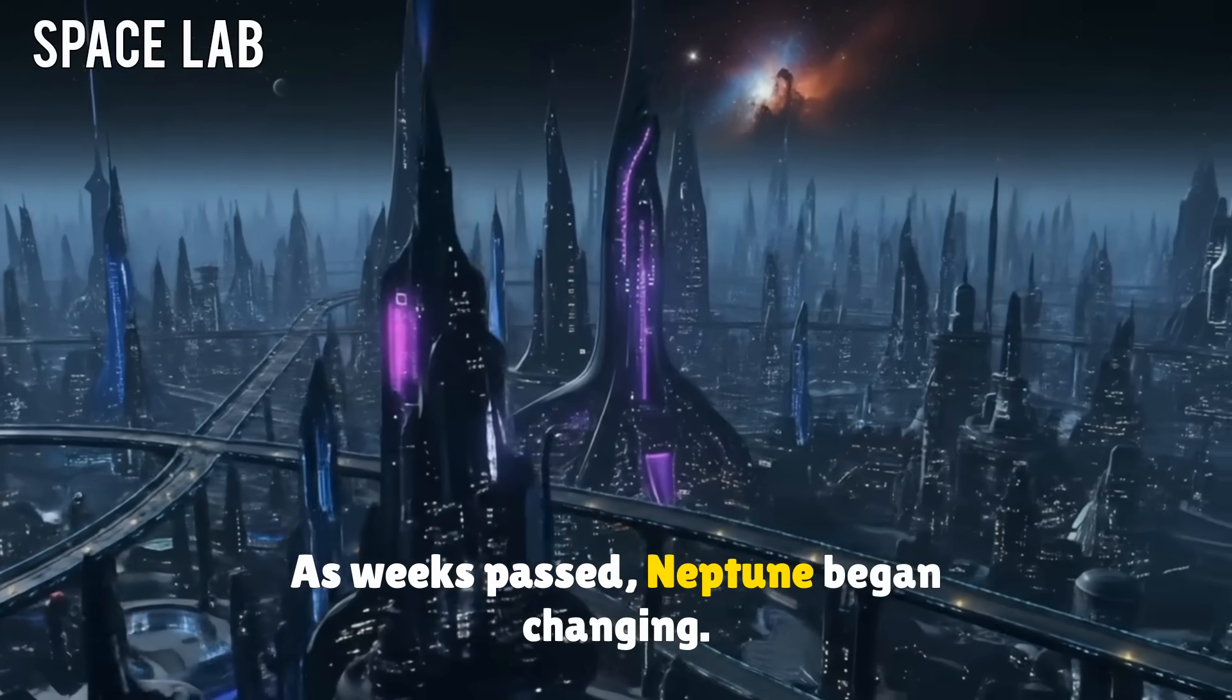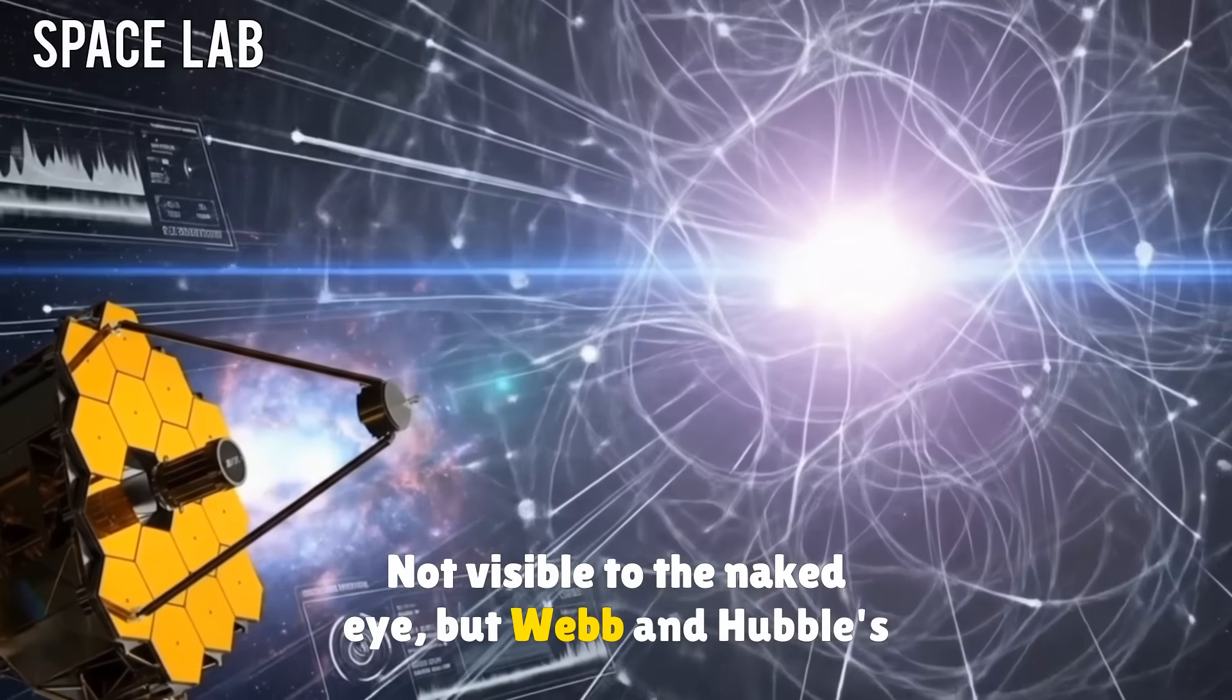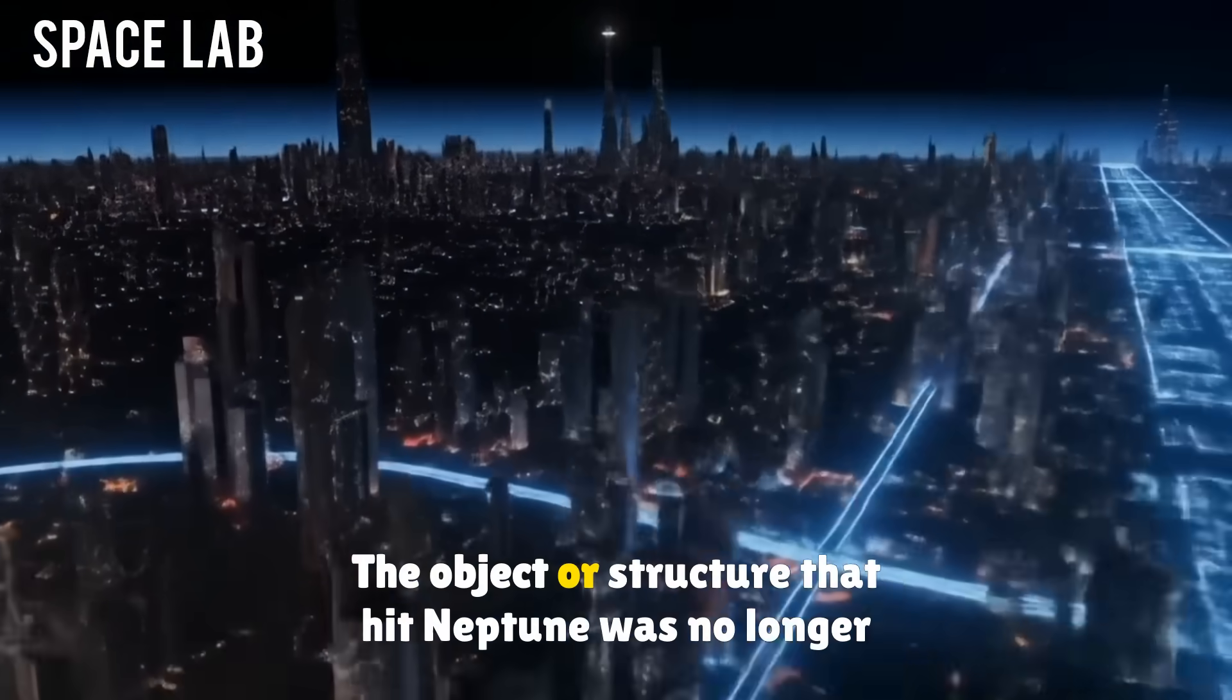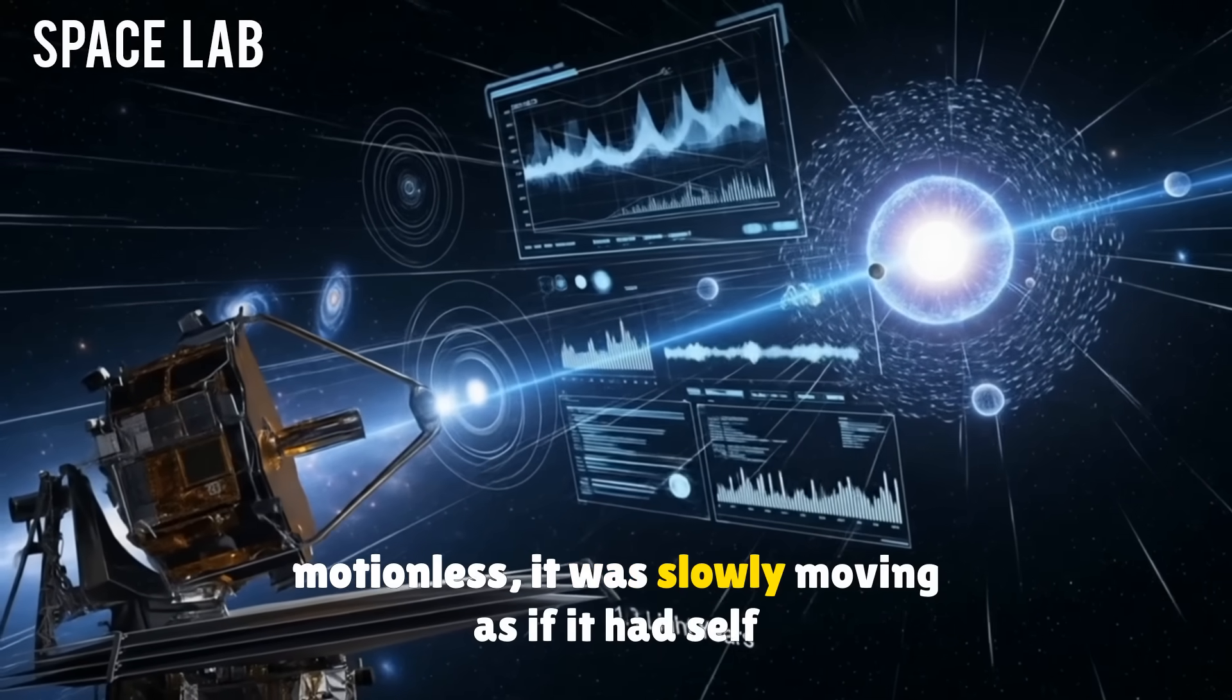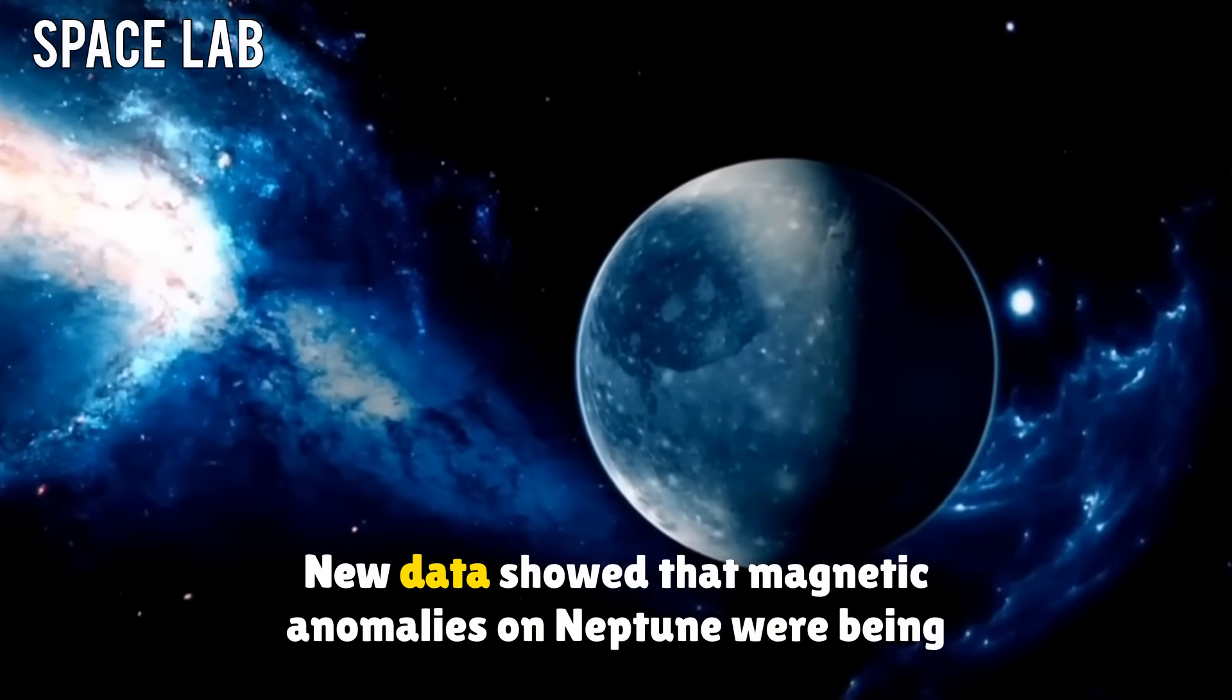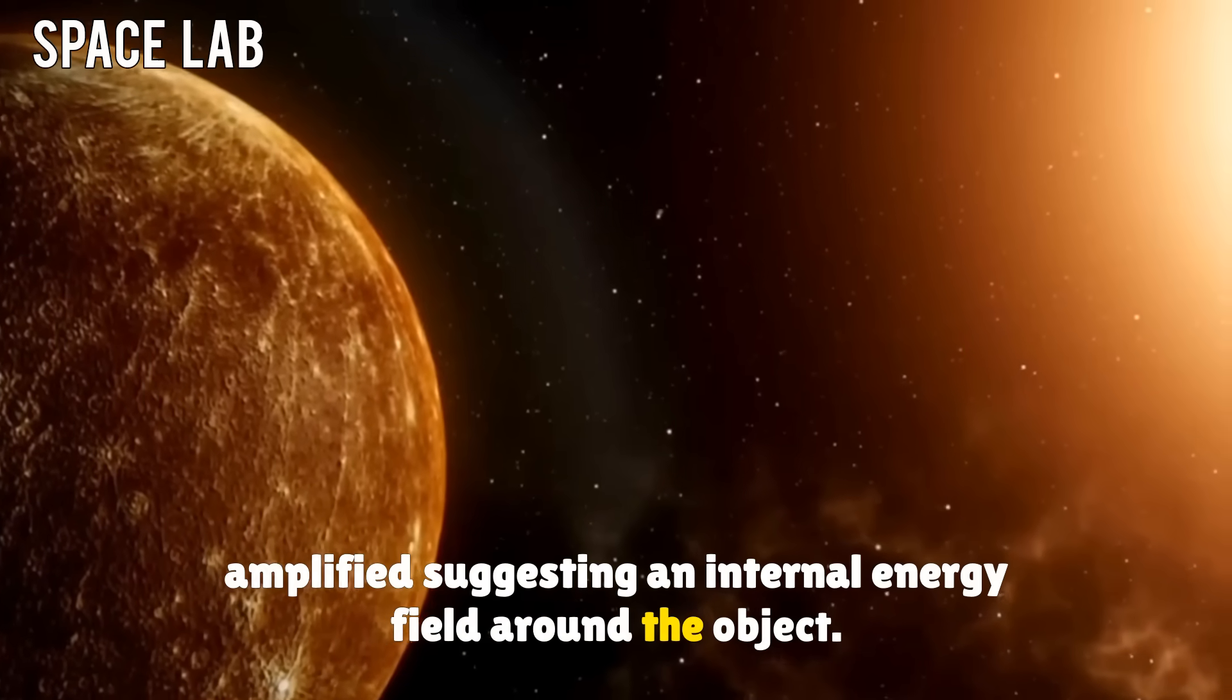As weeks passed, Neptune began changing. Its blue hue shifted slightly. Not visible to the naked eye, but Webb and Hubble's high-resolution sensors showed increasing density in its southern cloud formations. The object, or structure, that hit Neptune was no longer motionless. It was slowly moving, as if it had self-propulsion. Astronomers called it the hidden visitor. New data showed that magnetic anomalies on Neptune were being amplified, suggesting an internal energy field around the object.